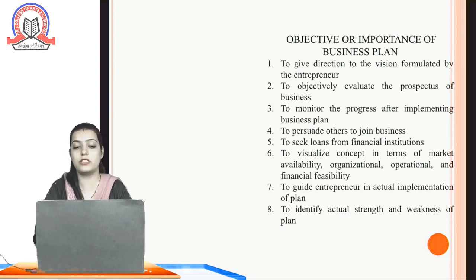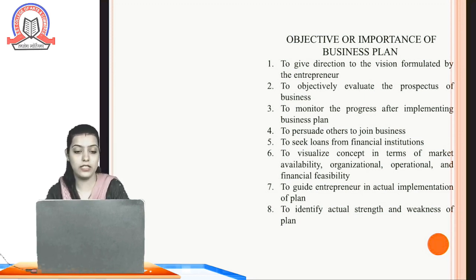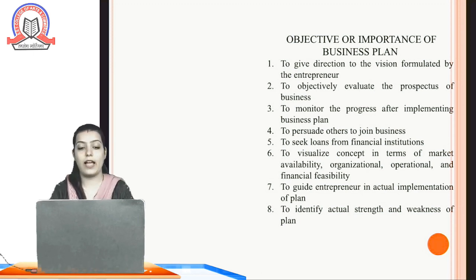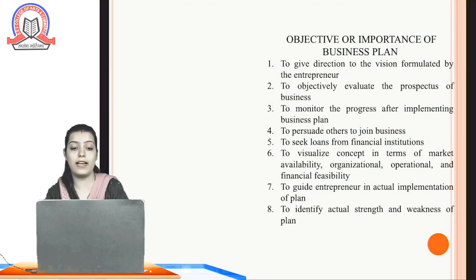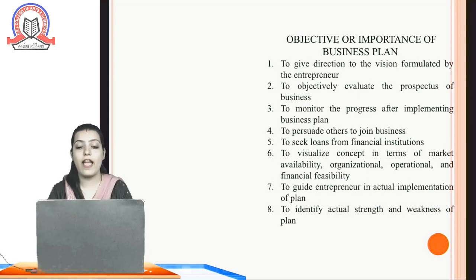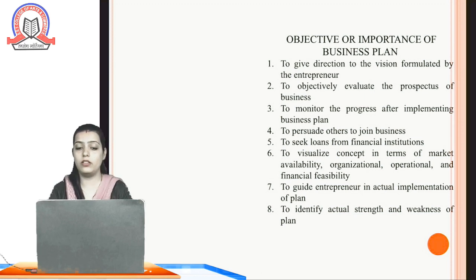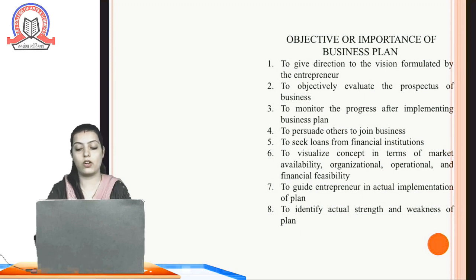The next objective is to visualize concepts in terms of market availability, organizational, operational, and financial feasibility. The seventh is to guide the entrepreneur in the actual implementation of the plan — whatever we have planned, it is important to guide the entrepreneur about implementation. The eighth is to identify actual strengths and weaknesses of the plan, so we can work accordingly.